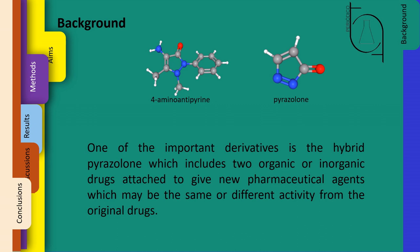Background: 4-aminoantipyrene is one of the pyrazolone derivatives. It has been exposed to a large range of biological activities as an antimicrobial, analgesic, antiviral, anti-inflammatory, and anti-cancer compound. One of the important derivatives is the hybrid pyrazolone which includes two organic or inorganic drugs attached to give new pharmaceutical agents which may be the same or different activity from the original drugs.